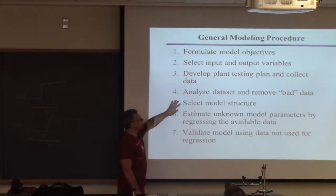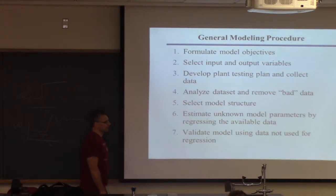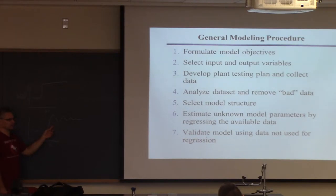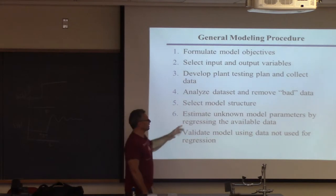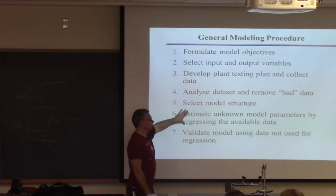So once you decide you have second order plus time delay as your model, then you need a gain, a time delay, a time constant, and a damping coefficient. Those are the parameters of the model. You don't know what they are. You try to find them so they fit the data, so that when you plot your model prediction on top of this data, it's close. So that's like regression.